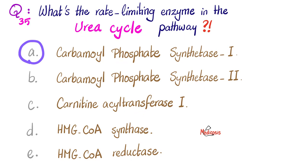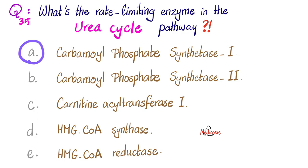Let's answer all of the rest of them. Carbamoyl phosphate synthetase 2 is the rate-limiting enzyme in pyrimidine synthesis. Don't forget that pyrimidine is part of your DNA and RNA. CAT1, or carnitine acyltransferase 1, is the rate-limiting enzyme in fatty acid oxidation, such as beta oxidation. HMG-CoA synthase is the rate-limiting enzyme in ketogenesis or ketone body formation. Don't forget your ketone bodies are acetone, acetoacetic acid, and beta-hydroxybutyric acid. As for HMG-CoA reductase, this is the rate-limiting enzyme in de novo cholesterol synthesis by your liver's hepatocytes.